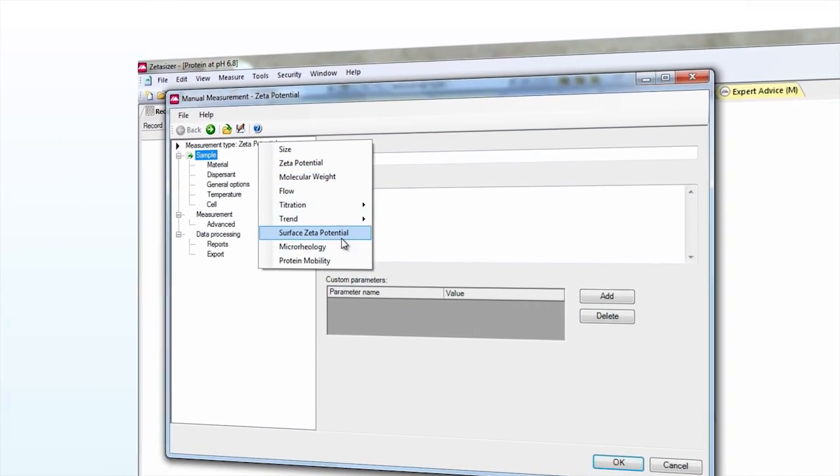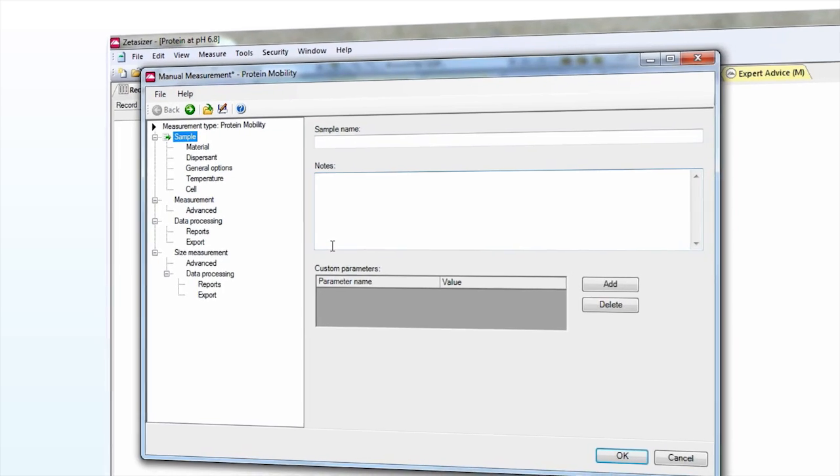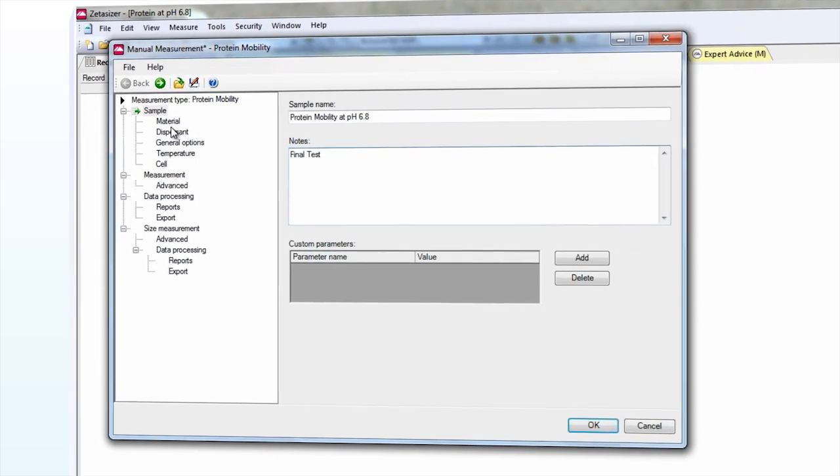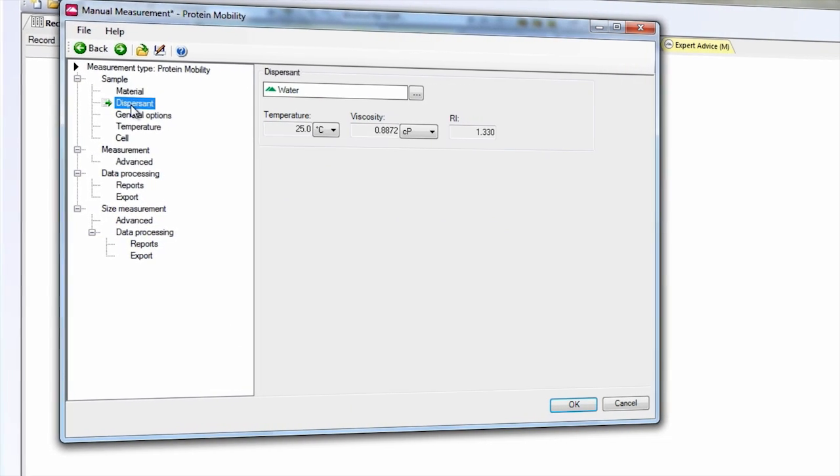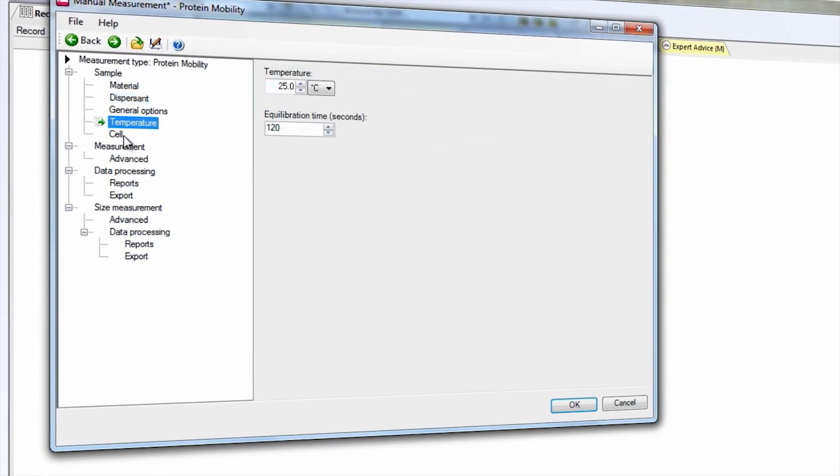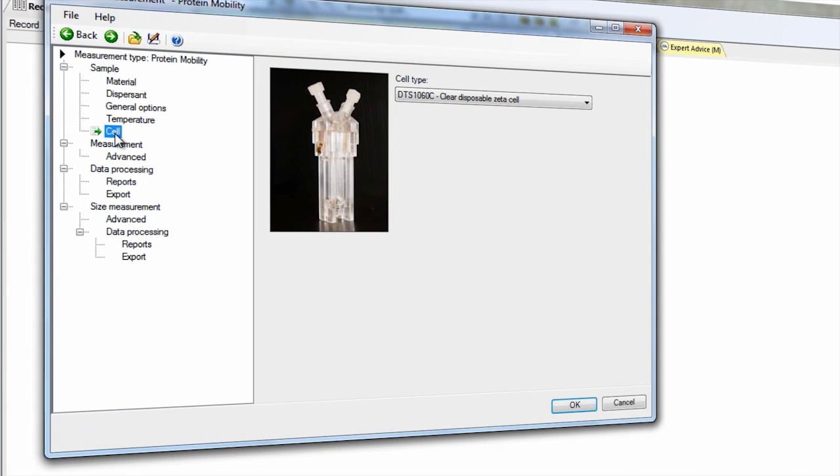After selecting the Protein Mobility Standard Operating Procedure from the drop-down menu, the preset operating conditions appear. As you can see, no user intervention is required to start the measurement. It also shows you which measurement cell to use.